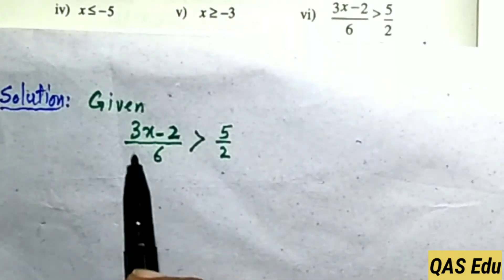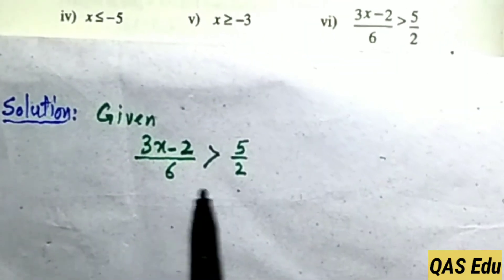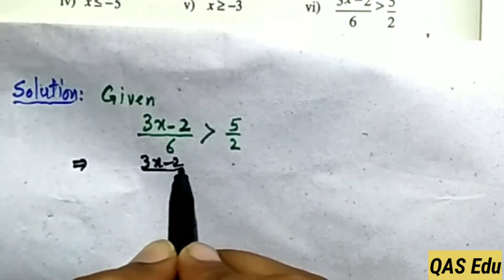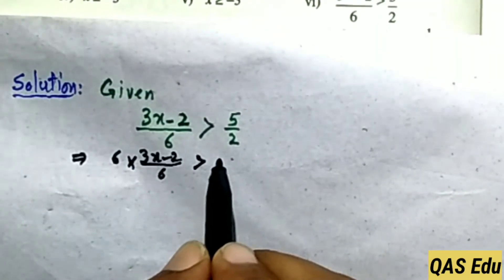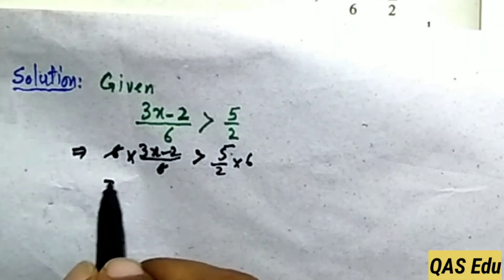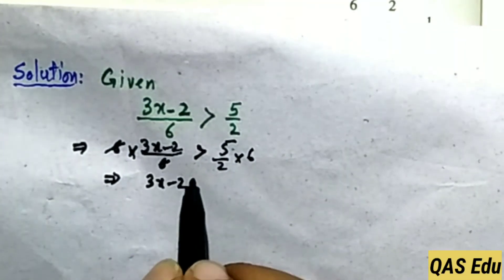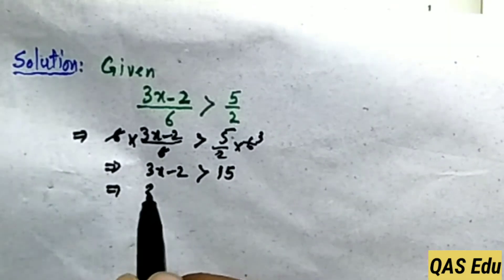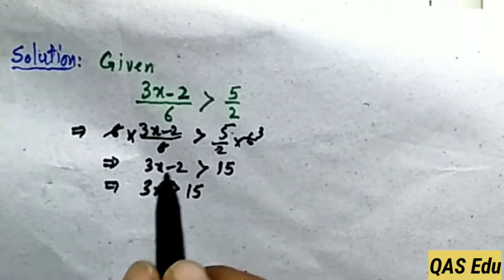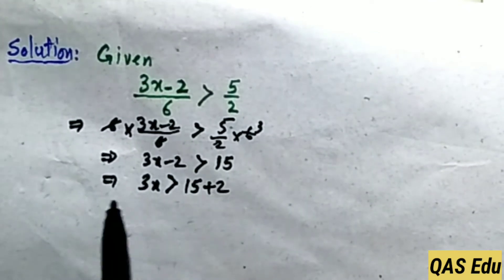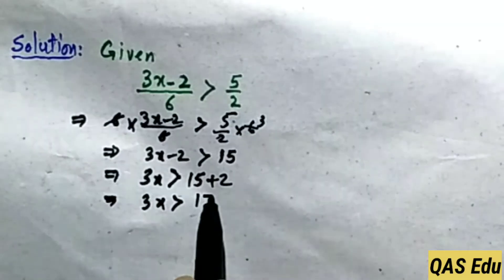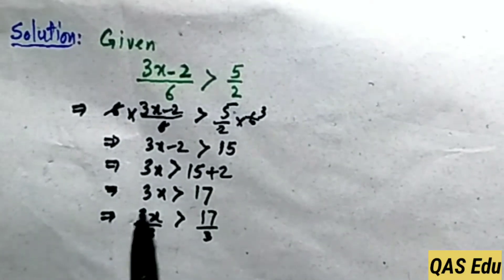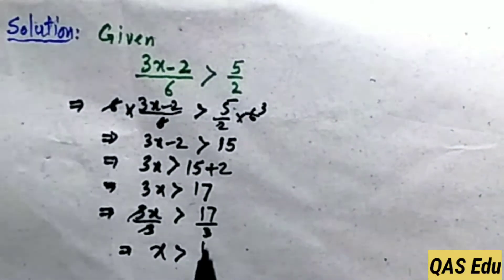Part 6 has a linear inequality. Divide by 2 to solve, or multiply by 6 to clear fractions. Multiply both sides by 6: left side gives 3x minus 2, right side gives 2 ones are 2 and 2 threes are 6, and 5 times 3 equals 15. Move minus 2 to the right as plus 2. Then 3x is greater than 15 plus 2, which is 17. Dividing both sides by 3 gives x is greater than 17/3.